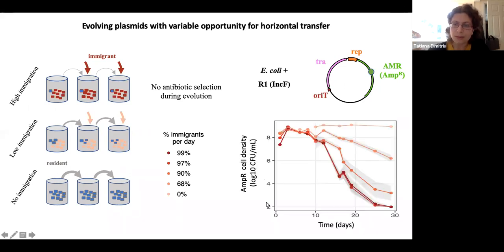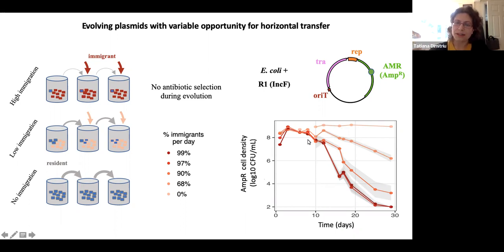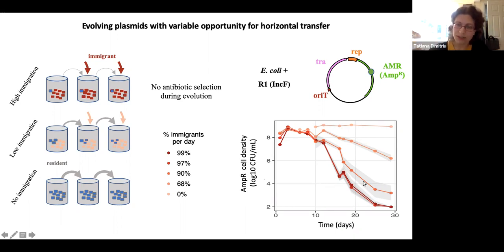This is the population dynamics we observed. For roughly 10 days, plasmid-carrying cells subsisted at high levels in the populations, until after which time there was a decrease in plasmid-carrying population density as measured by ampicillin resistance, especially with high immigration treatments.